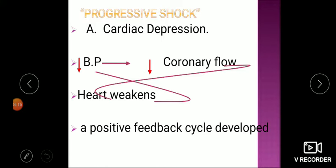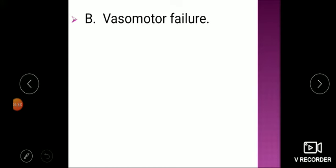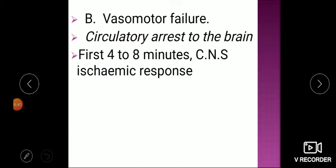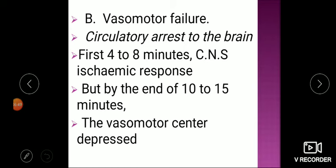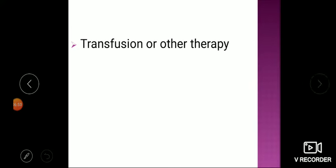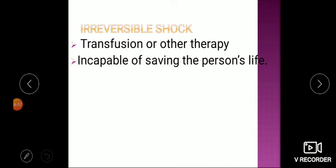In the progressive phase, desperate medical intervention is required to bring the patient back to normal by all possible means. If medical attention is still not given, the patient will progress to vasomotor failure and circulatory arrest to the brain. The vasomotor center becomes depressed within 10 to 15 minutes, and transfusion or other therapies become incapable of saving the patient's life — this is called irreversible shock, the third and most dangerous stage.